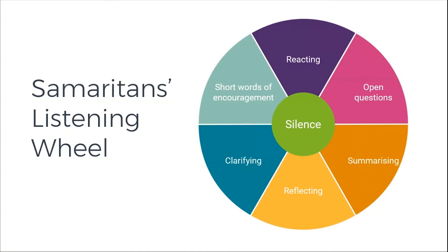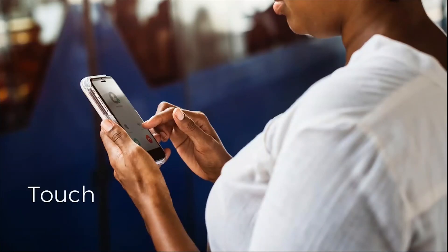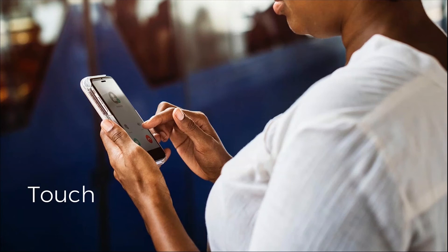On a computer screen the wheel works pretty well - add a couple of clicks and you're done. But on phones it's a different kettle of fish. When you shrink the wheel down it becomes small and fiddly to interact with, and the text becomes very difficult to read. Most authoring tools will adapt it down to a stack of blocks, but then we've lost our wheel - and the wheel was our memory anchor.